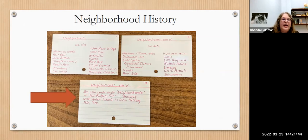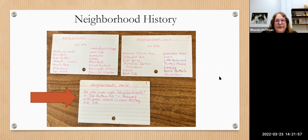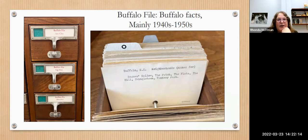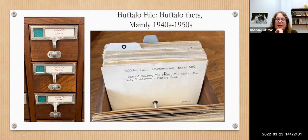We have sections in our local history file on neighborhoods. You can look under various neighborhood names to find out what your ancestor's life was like. There are also subsections in the card catalog called the 'Buffalo file,' which has a lot of Buffalo facts mainly from the 1940s and 50s, with references to resources published earlier. It has a section on neighborhoods explaining places you might come across in your reading: Rogues Hollow, the Patch, the Flats, the Hill, Shingletown, and Tannery Park.